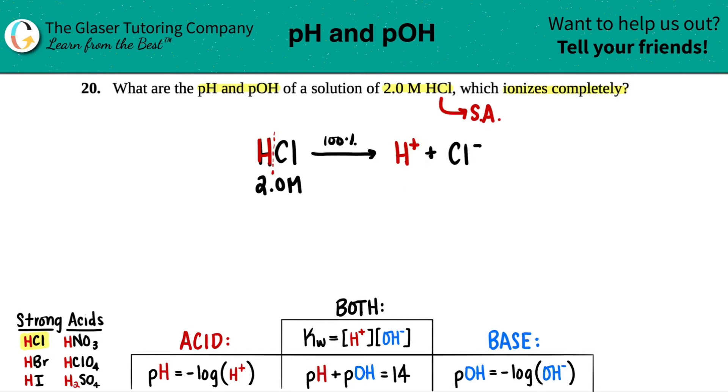The way that we're going to figure out what the correct molarities are is looking at the coefficients. Of this balanced equation, there was one HCl for every one H plus and for every one Cl minus. So look, all the numbers have to be the same. So if you start off with two molarity and it's a one to one, that means that whatever number this is, the H plus has to be the same.